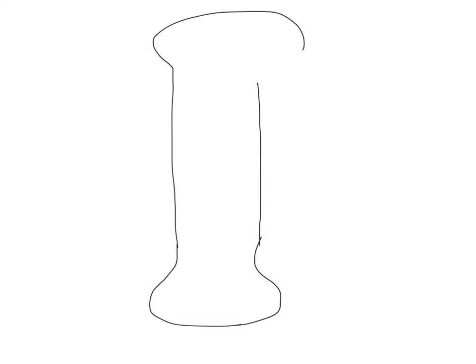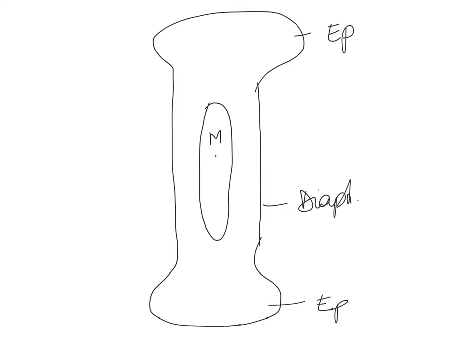Just like we did for intramembranous ossification, we need to remind ourselves of our goal for endochondral ossification: we're going to try to form a long bone. A typical long bone needs a diaphysis — you know all of this already from studying bone anatomy — with the ends which we refer to as the epiphyses. Inside of the diaphysis we're going to have our medullary cavity.